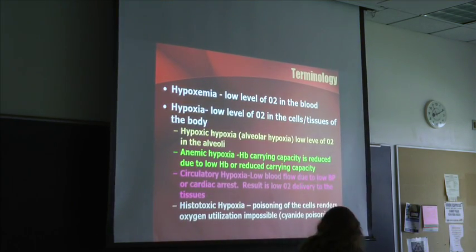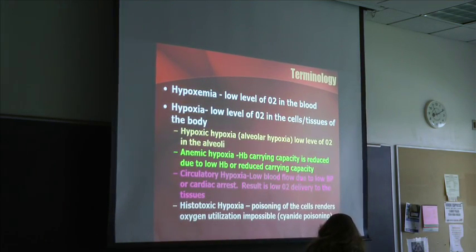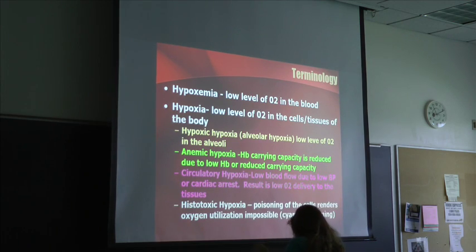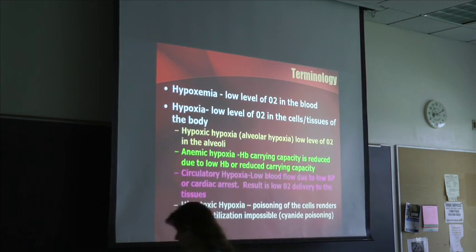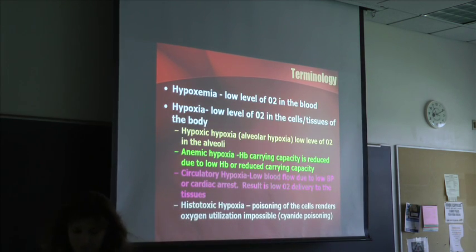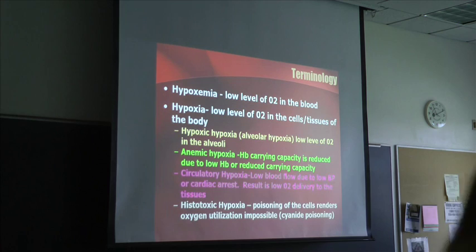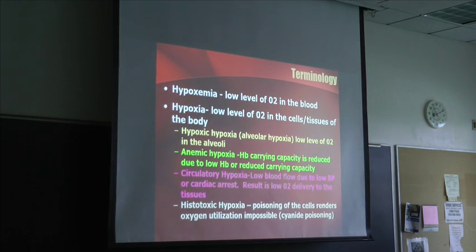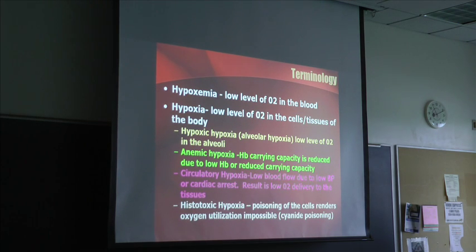Alright, some terminology to learn when talking about oxygen levels. The first one you've heard about already: hypoxemia. Hypoxemia is a low level of oxygen in the blood, and that's what we measure with the pulse oximeter or the arterial blood. We're looking for hypoxemia — a low oxygen level in the blood.